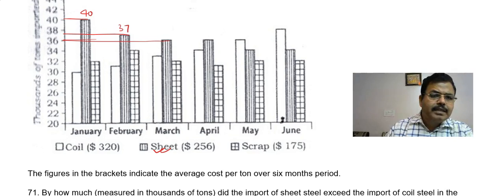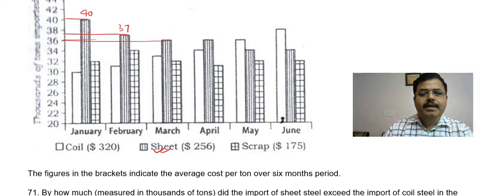Yes, this is 36. So 36 plus 37 plus 40: 36 plus 37 is 73, plus 40 is 113. Total import of sheet steel is 113 total for the first three months.